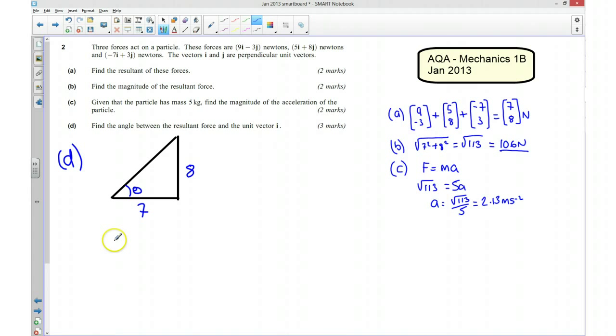So because I've got my opposite side and my adjacent side, I know that tan theta is going to be equal to 8 sevenths. So I can work out what theta is using my calculator. So my angle of theta is going to be the inverse tan of 8 sevenths. So my angle of theta is going to be 48.8 degrees.